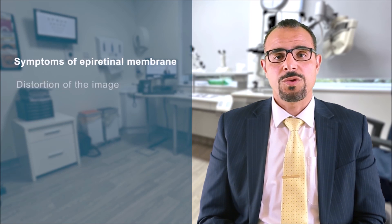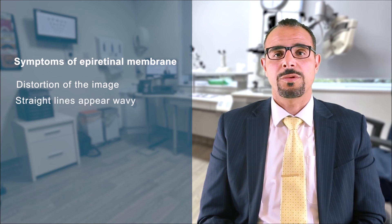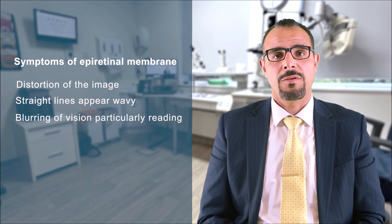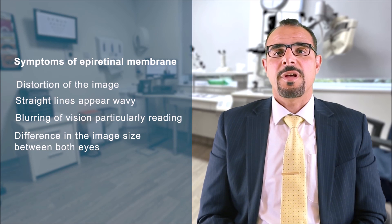The majority of epiretinal membranes are mild and have limited impact on vision. However, in some people these membranes may continue to grow, leading to further wrinkling of the retinal surface, which may cause distortion of the image — so straight lines may appear wavy or distorted. They can also lead to blurring of vision, and some people may experience a difference in image size between both eyes. The severity of symptoms mainly depends on the impact of the membrane on the retina.